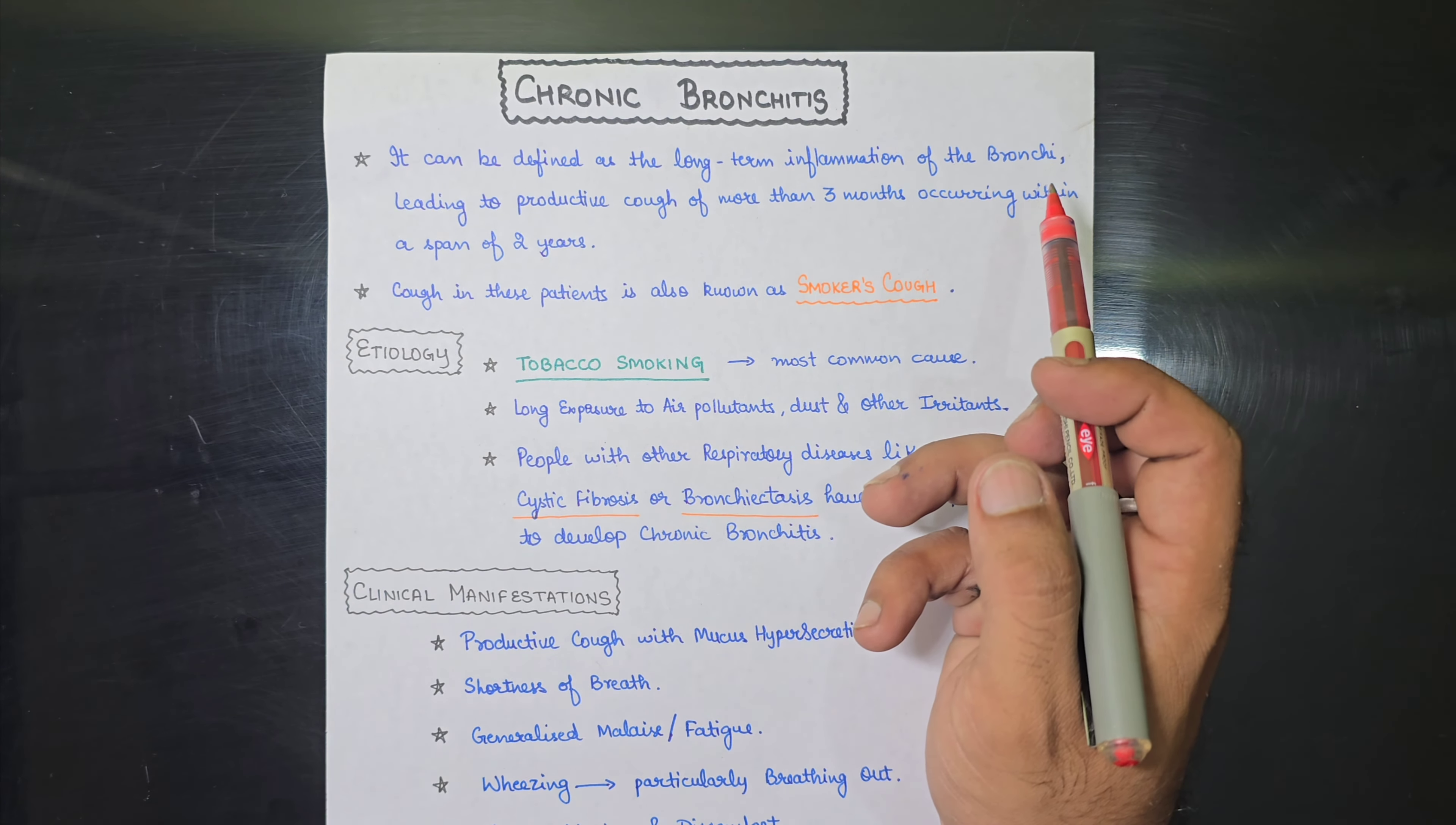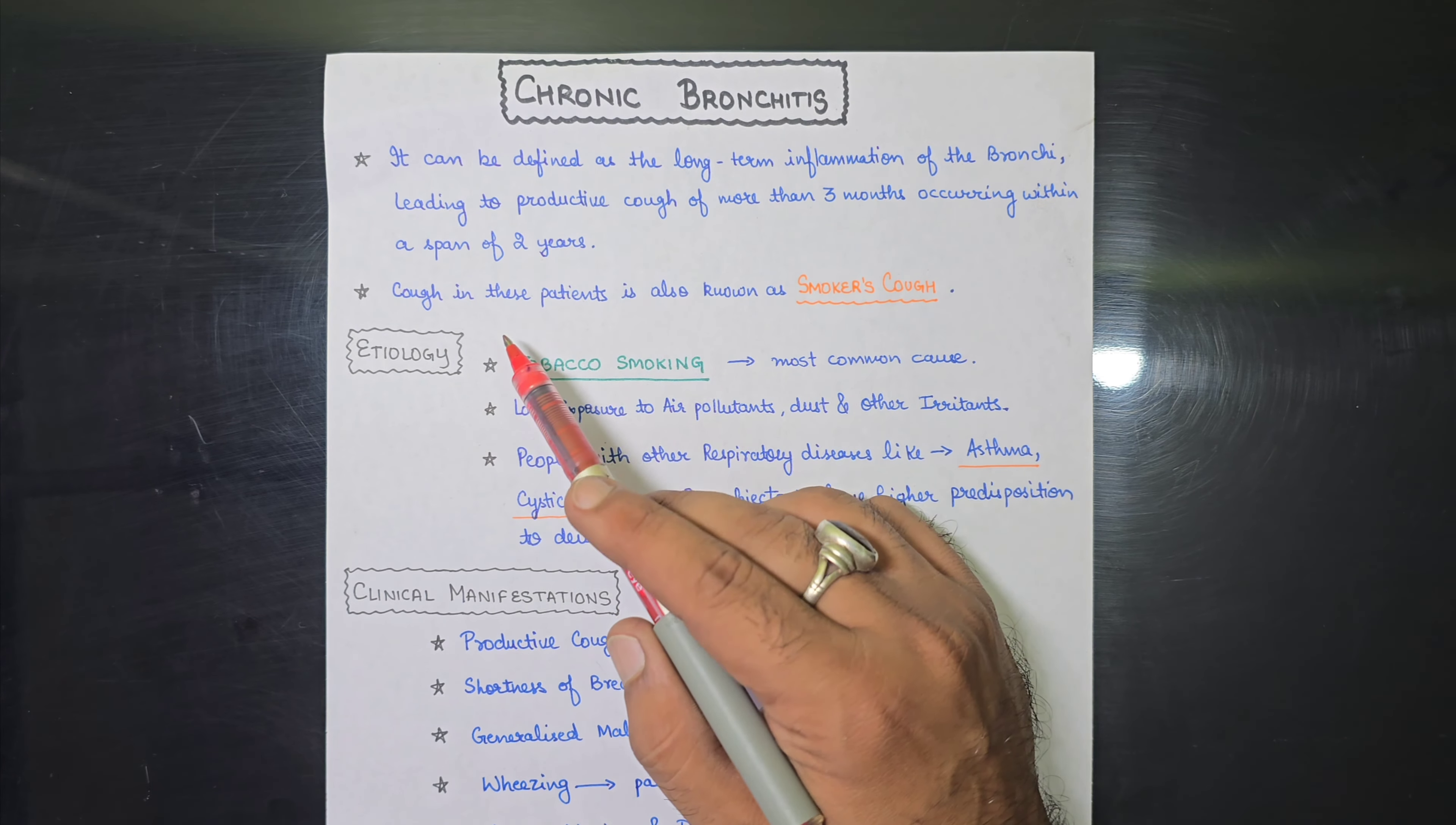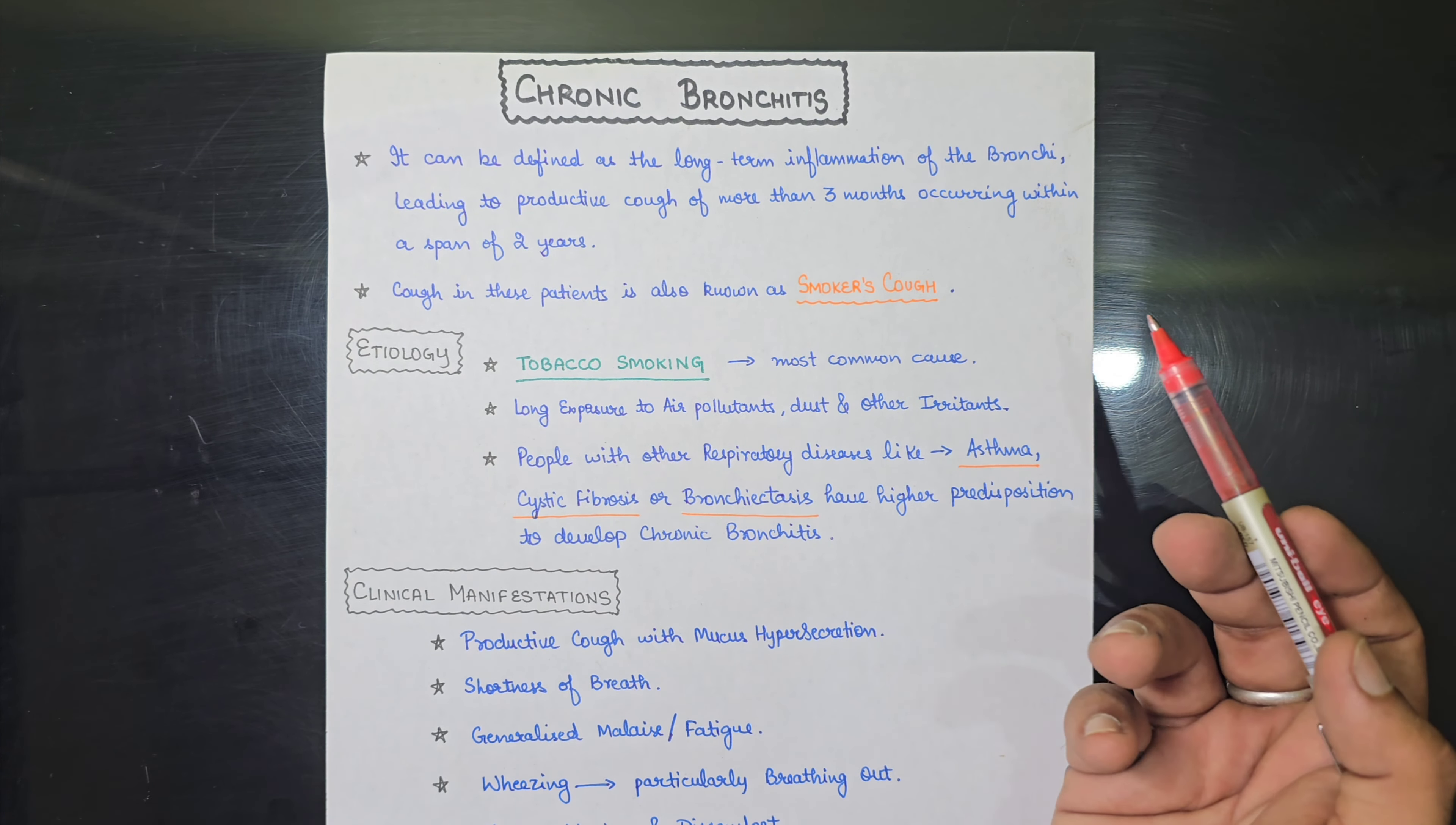So what is chronic bronchitis? It can be defined as a long-term inflammation of the bronchitis leading to productive cough of more than three months that are occurring within a span of two years. The cough in this patient is also known as smoker's cough.